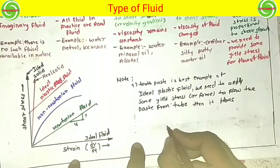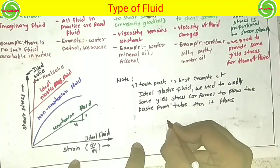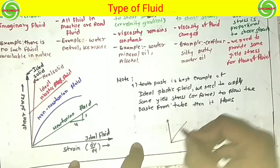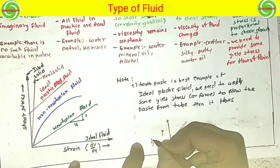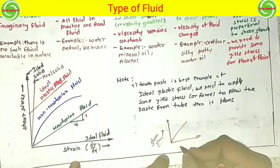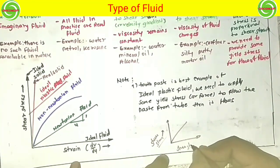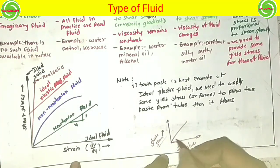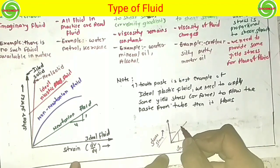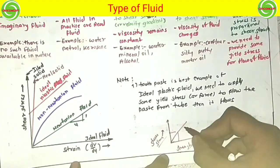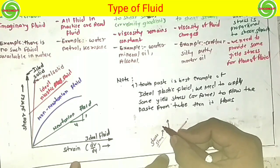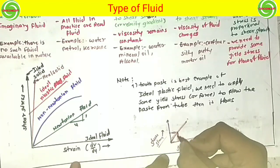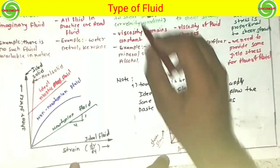For example, when you apply force on any fluid, the shear stress and shear strain are both present. As you increase the shear stress, your shear strain also increases, because both are proportional to each other. This shows a linear relationship. As you increase the shear stress, your shear strain is also increased. This relationship holds for Newtonian fluid.